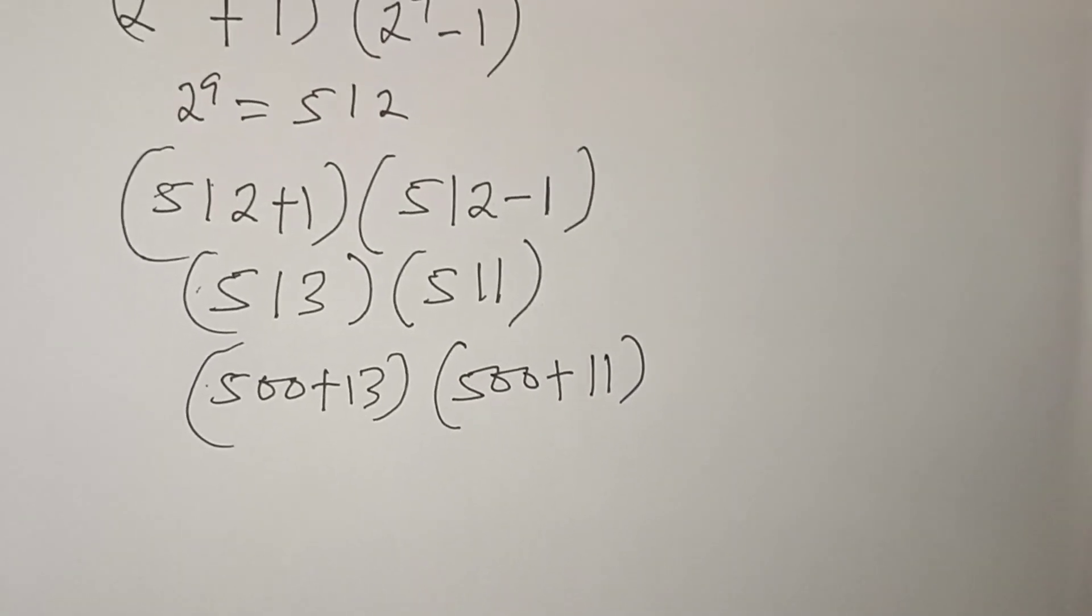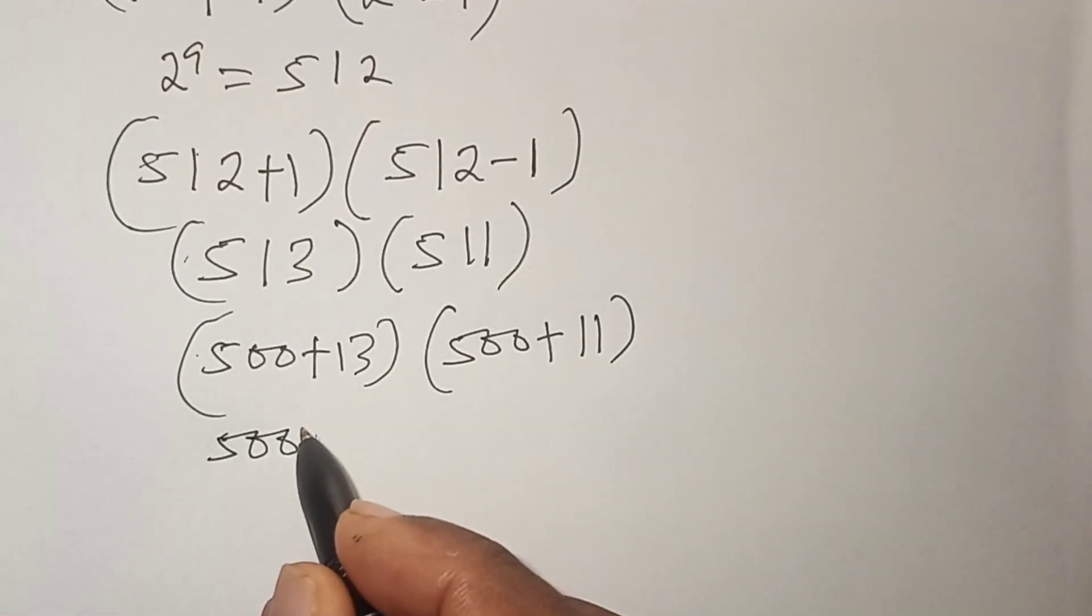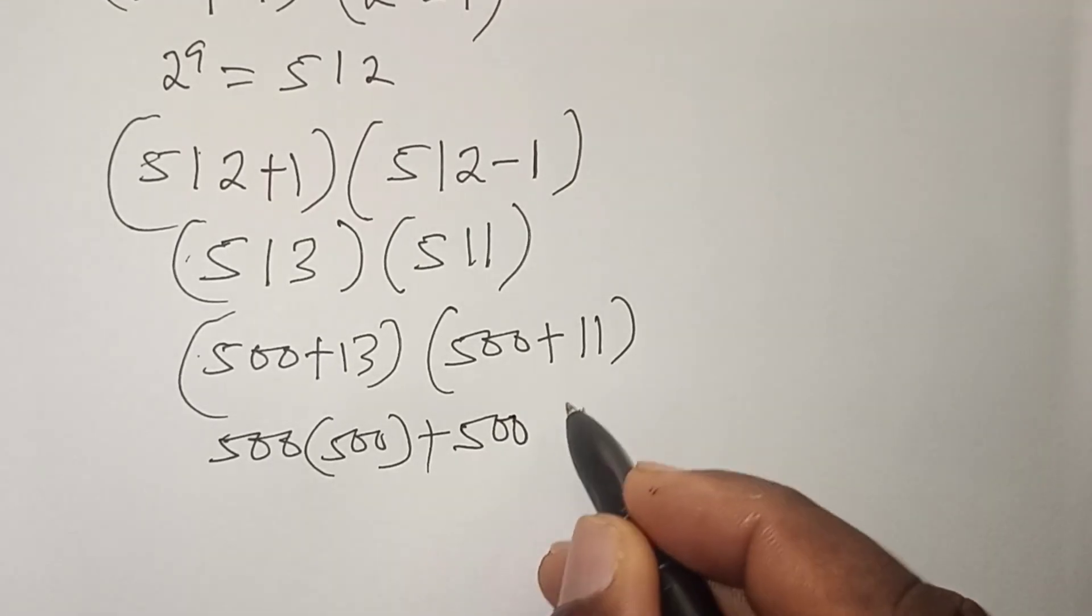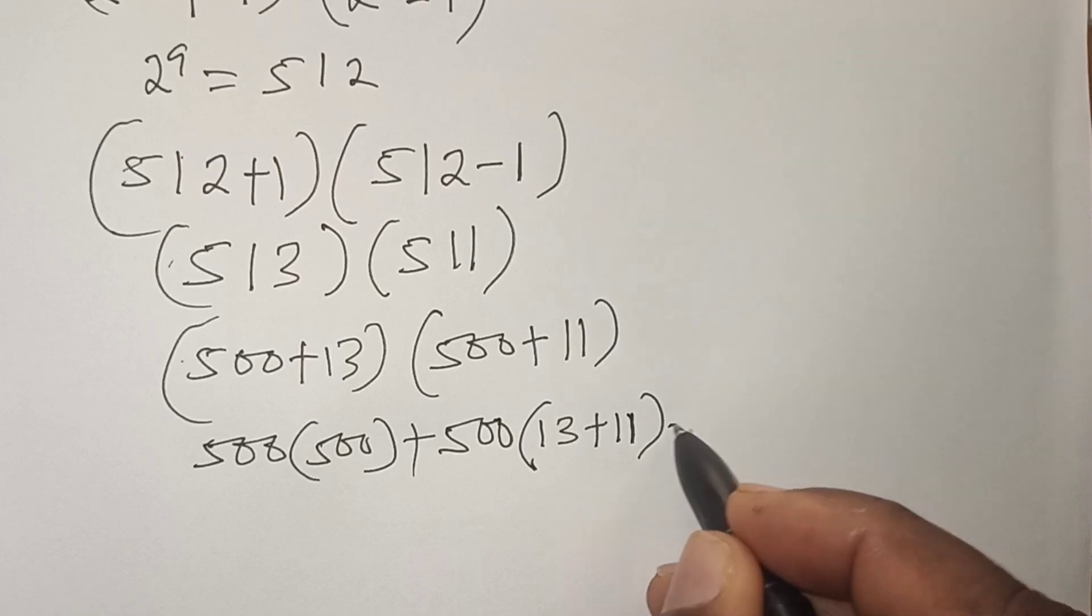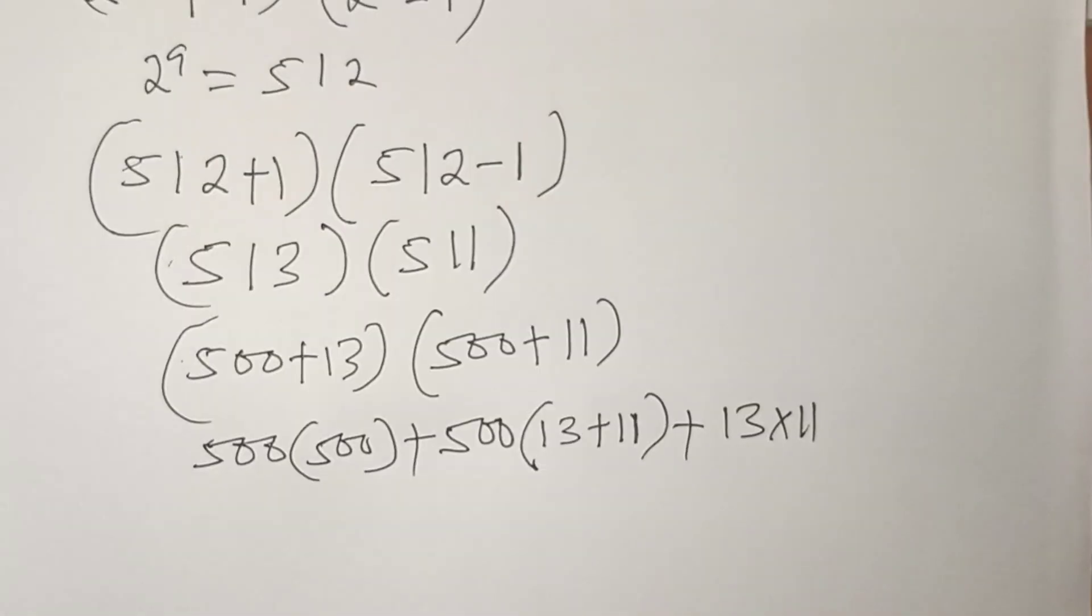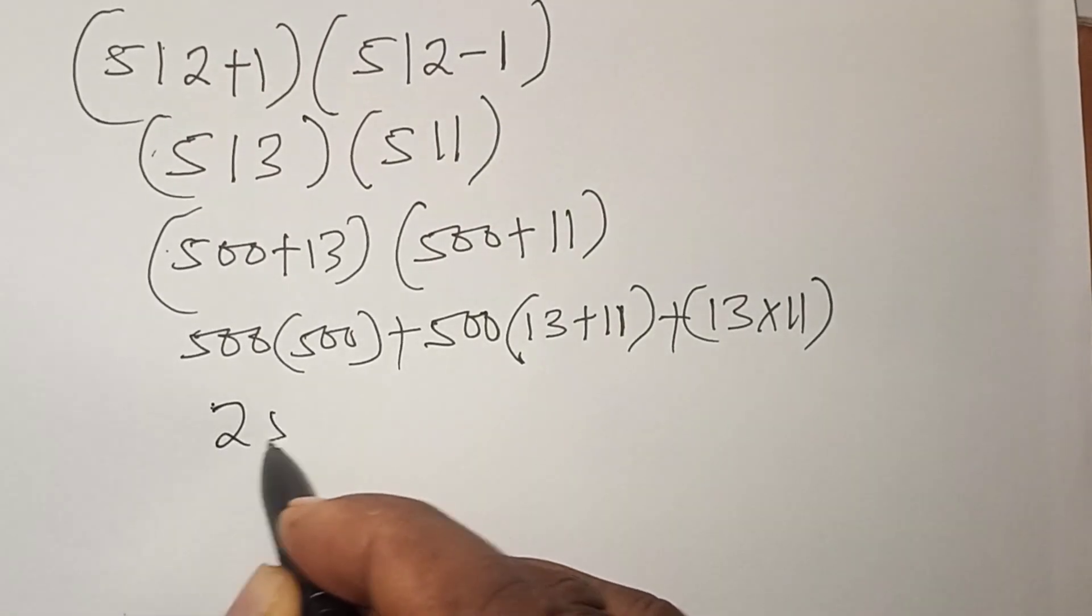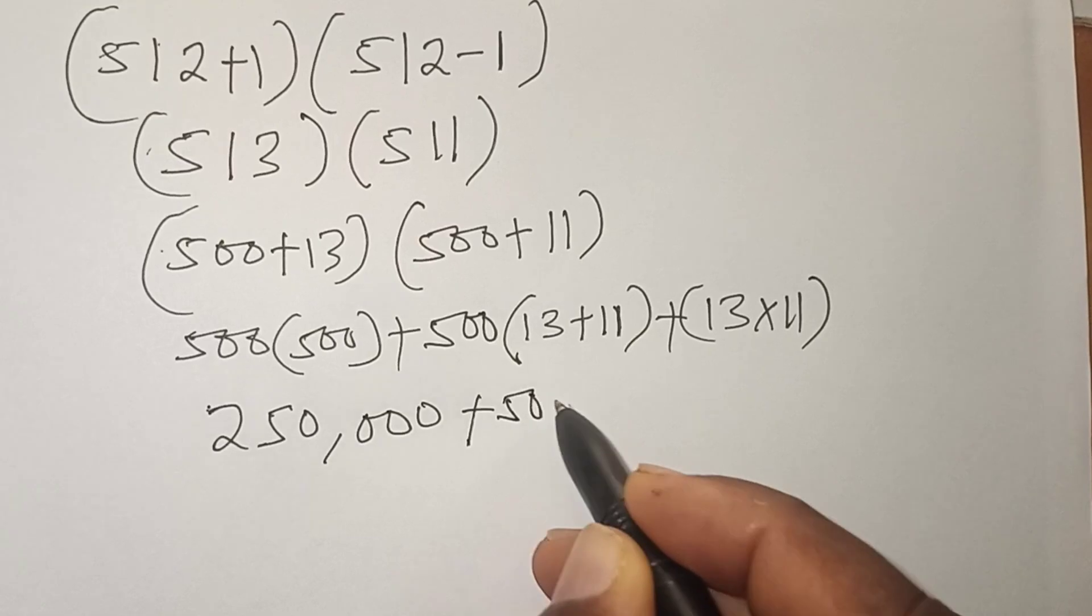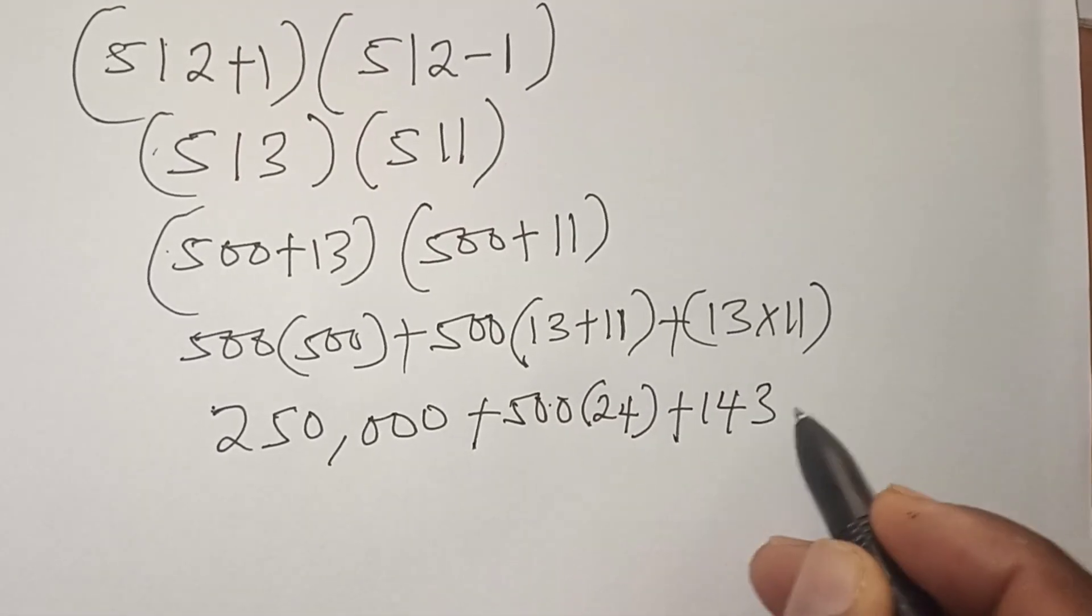Using the FOIL method to multiply, we get 500 times 500 plus 500 times 13 plus 500 times 11, then plus 13 times 11. This gives us 250,000 plus 500 times 24 plus 143.